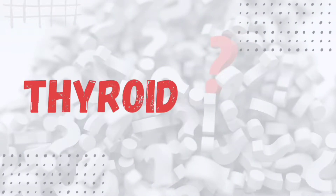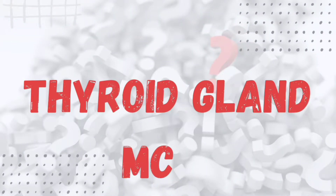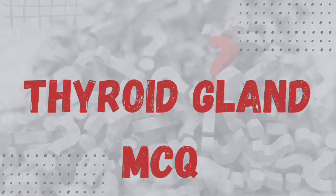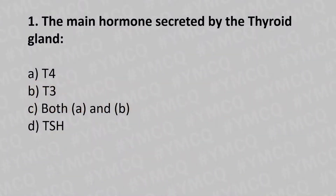Hello, welcome to today's topic: Thyroid Gland MCQ. Let's move to question number one. The main hormone secreted by the thyroid gland is: option A - T4, option B - T3, option C - both A and B, option D - TSH.